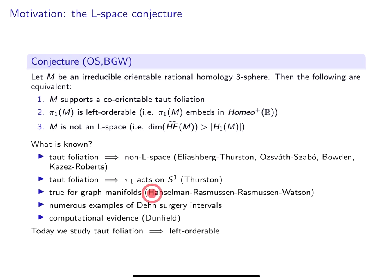We know this essentially by a complete classification of the manifolds satisfying each of these three conditions. Next, we know many examples of intervals of Dehn surgeries on knots and links for which some or all of these conditions coincide.